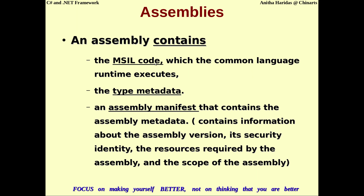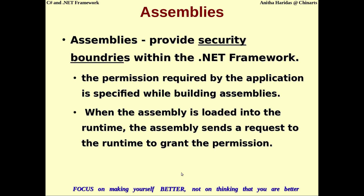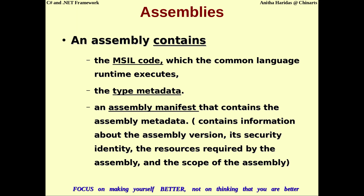The assembly contains the Microsoft Intermediate Language code, which is the platform-independent code used for CLR execution. All the data types and type metadata — information about the types used in the assembly — are also available. It also contains an assembly manifest, which holds the assembly metadata: the version of the assembly, security identity, required resources, and the scope of the assembly.